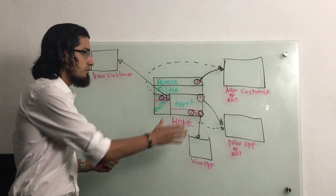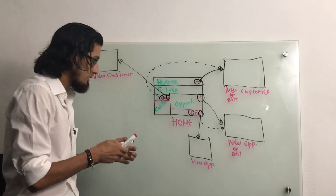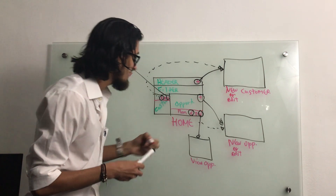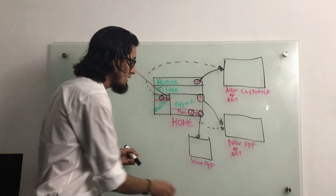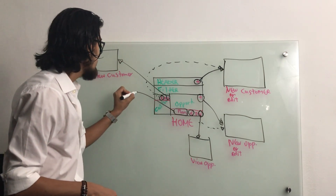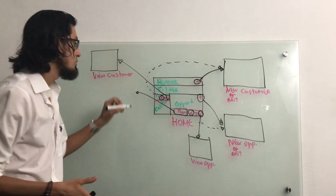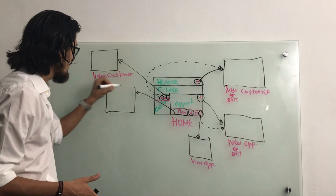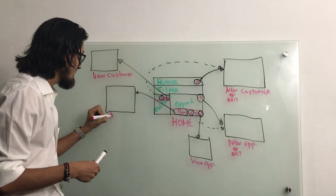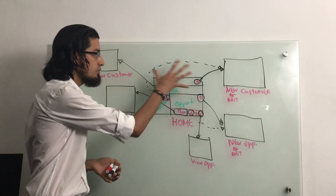Remember that from the opportunities section I also have a button to open an action plan. So when someone clicks on this button, we are going to open a new screen which is going to show me the action plan for that particular opportunity. So by now we have identified all the actions from the home screen.